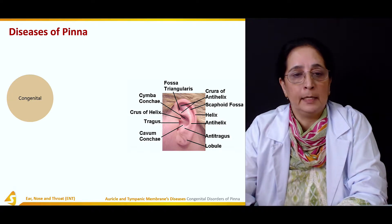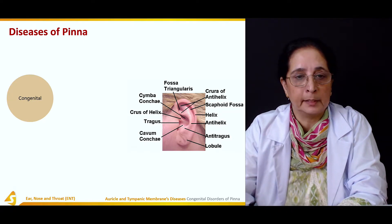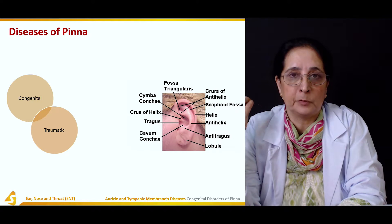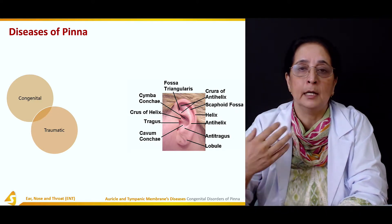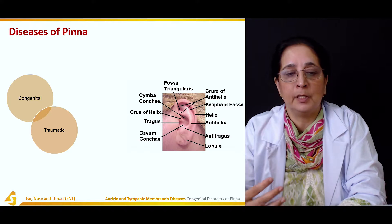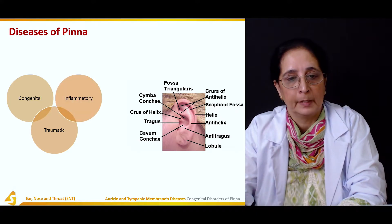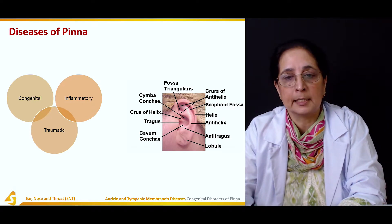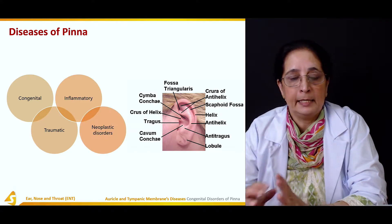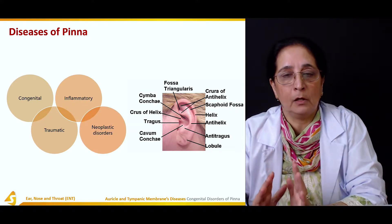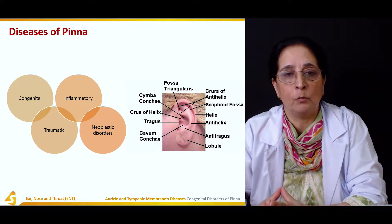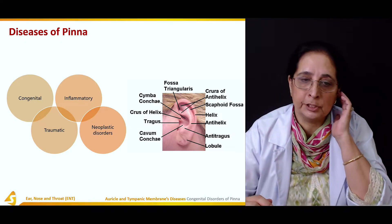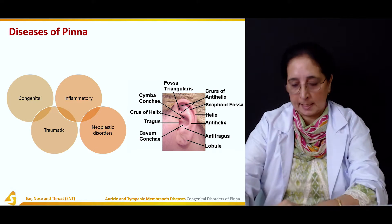The diseases of the pinna can be congenital, present at birth. They can be as a result of trauma, because this is an area exposed to the environment, so injury is very common. Then we have inflammatory disorders and different infections that can involve the pinna, and neoplastic disorders. So the categories are congenital, inflammatory, traumatic, and neoplastic disorders.